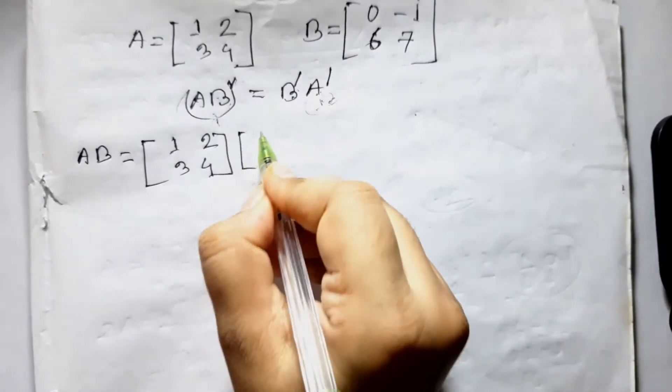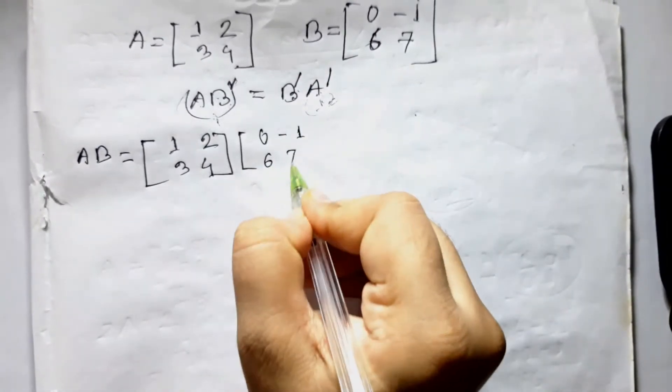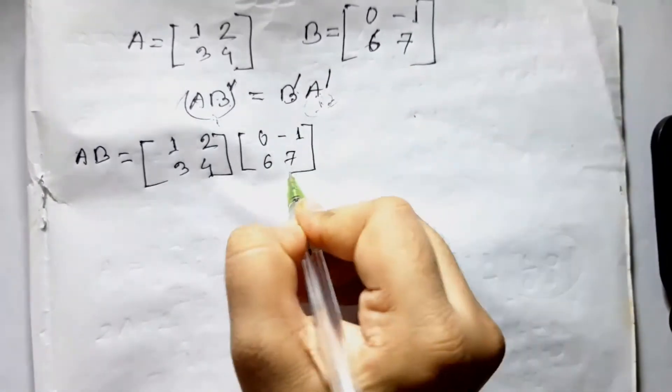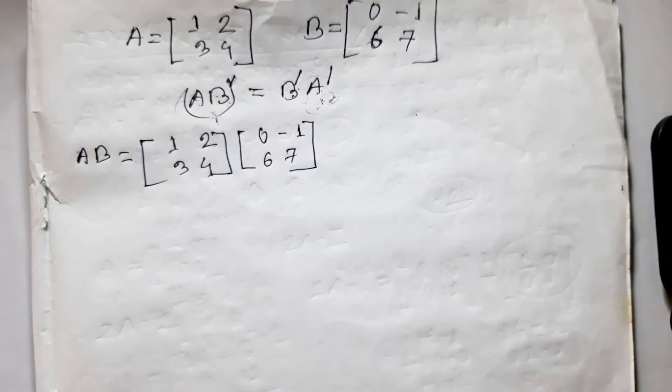So 0, 1, 6, 7. Now the question is, let's see how we find this.